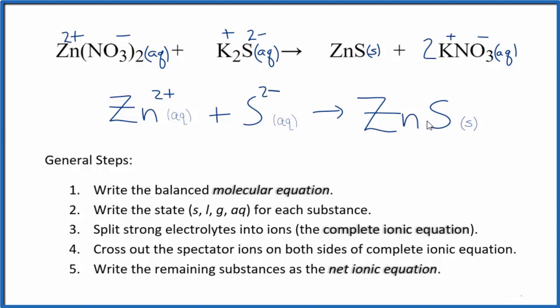Count the atoms up. They're balanced as well. This is Dr. B with the balanced net ionic equation for Zn(NO3)2 plus K2S, zinc nitrate plus potassium sulfide. Thanks for watching.